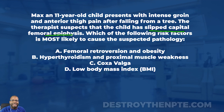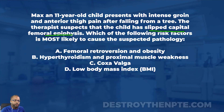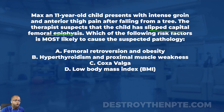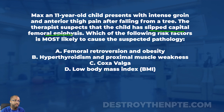The last sentence of the question stem asks which risk factor is most likely to cause the suspected pathology — so we're looking for a risk factor of SCFE. For those on the podcast, the answer choices are: A — femoral retroversion and obesity; B — hyperthyroidism and proximal muscle weakness; C — coxa valga; D — low body mass index. Answer A has two parts, so we need to make sure both are correct. Is femoral retroversion a risk factor for SCFE?